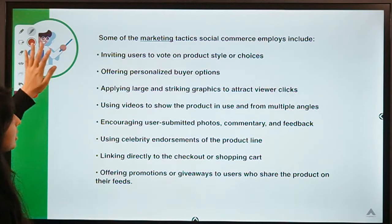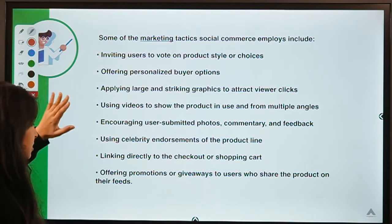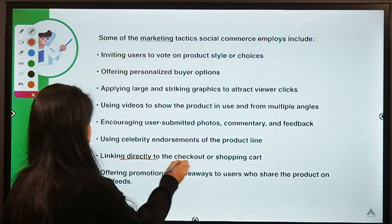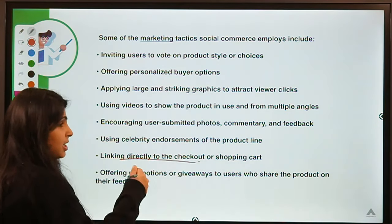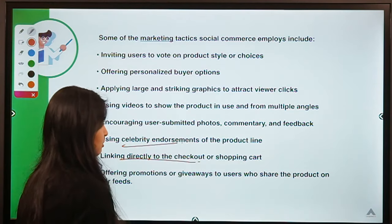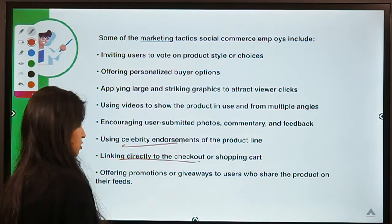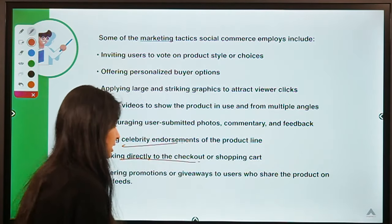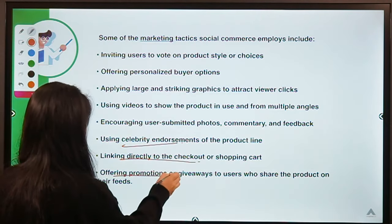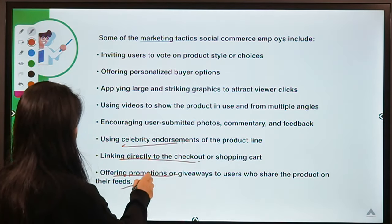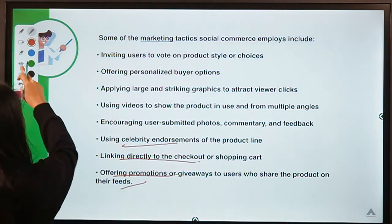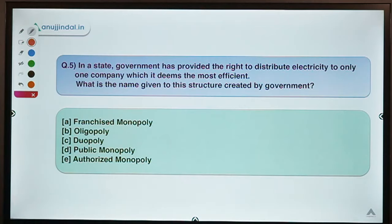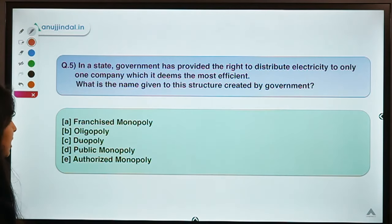Marketing tactics in social commerce include linking directly to the checkout from the shopping cart for faster checkout, using celebrity endorsements and influencers, and offering promotions or giveaways to users who share products. These tactics encourage use of social shopping tools, forums, and communities where buyers and sellers can interact — and checking online reviews has become a common tendency when buying products online.